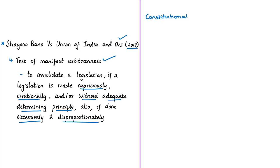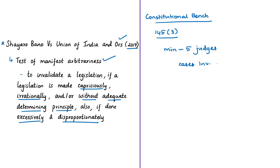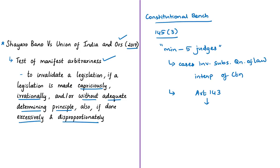The news article mentions that these statements were observed by constitutional benches of the Supreme Court. A constitutional bench, as per Article 145 clause 3, requires a minimum of five judges to decide any case involving a substantial question of law requiring interpretation of the Constitution, or for hearing any reference under Article 143, which deals with the power of the President to consult the Supreme Court. So any bench with a minimum of five judges dealing with such questions is called a constitutional bench.